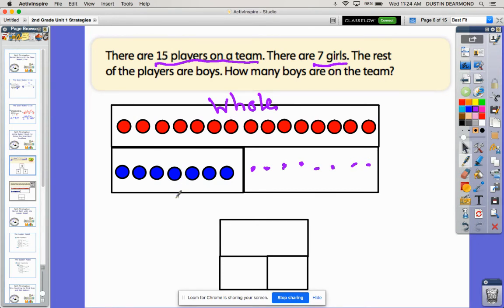This was the whole. This was the part that was girls - I'm going to put a G there. This is the part that was boys, and we said there were eight. So if I fill in the number bond below, my whole team was made up of 15 people with seven girls and eight boys. Pictures can be put into a number bond to help us solve those one-step word problems.